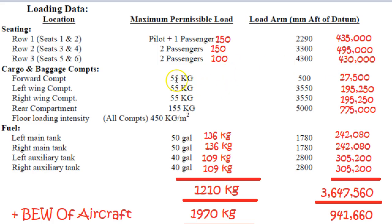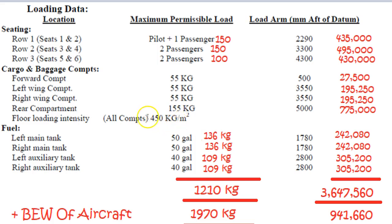These ones here already had weights, so we just multiply out 55 times 500 and we get that, and we do the same down here. We don't need to do anything for that yet — that's just the loading capacity of the floor. CASA loves to ask you about that, and you've got to work out the loading capacity of some little heavy parcel.